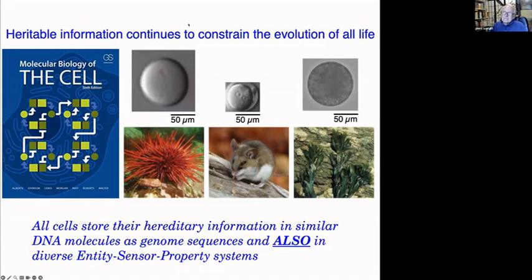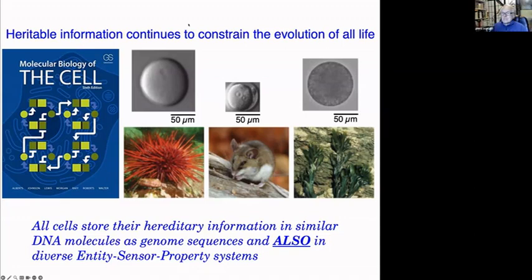This is not just theoretical or philosophical — it has an impact on disease. Right now when people say 'heritable disease,' they look at genome sequencing to find mutations. But you can get heritable diseases in many different ways, and that's one of the obvious things this framework brings up.